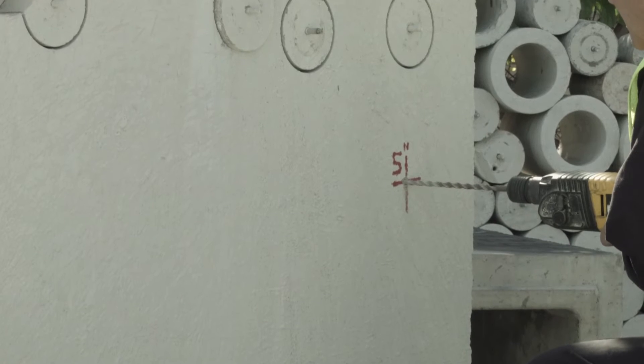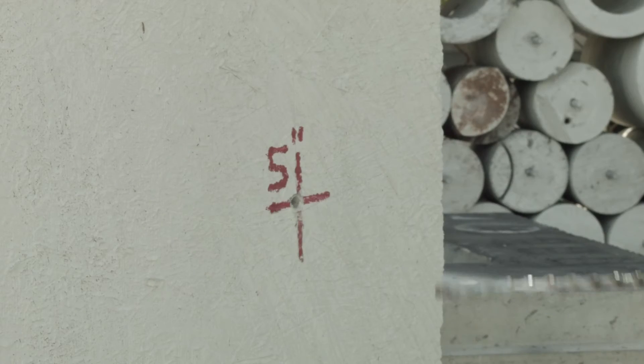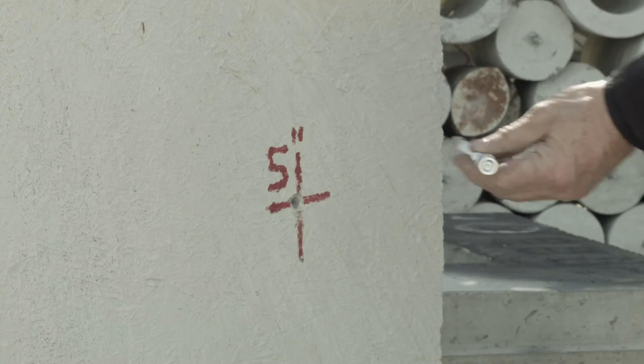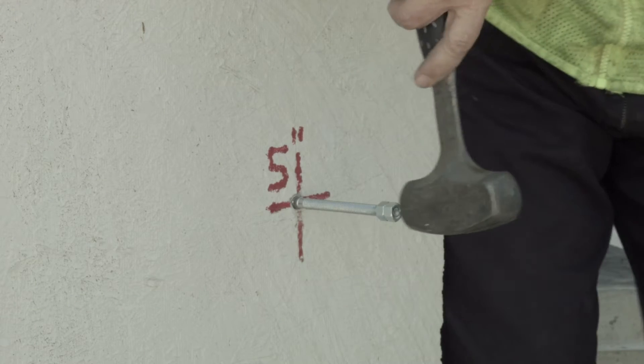The first step is to install a wedge anchor at least 5 inches long and 3/8 inch diameter in the middle of where the hole is to be drilled.